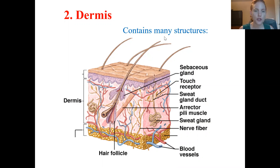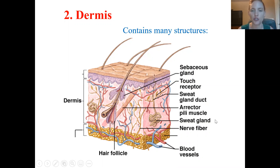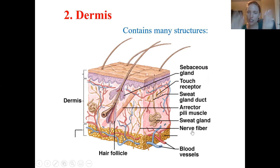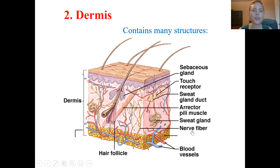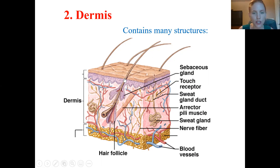Starting with the dermis: the dermis is the middle layer. Look at how many things are embedded in the dermis — you have sweat glands, it's made of connective tissue so it's vascularized with blood vessels, and you also have nerve fibers, axons, and receptors running through it. This is in contrast to the epidermis, which is an epithelial tissue that is avascularized — no blood vessels, just solid cells. That's one important difference between the two.